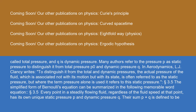Many authors refer to the pressure p as static pressure to distinguish it from total pressure p₀ and dynamic pressure q. In aerodynamics, L.J. Clancy writes: to distinguish it from the total and dynamic pressures, the actual pressure of the fluid — which is associated not with its motion but with its state — is often referred to as the static pressure, but where the term pressure alone is used it refers to this static pressure.